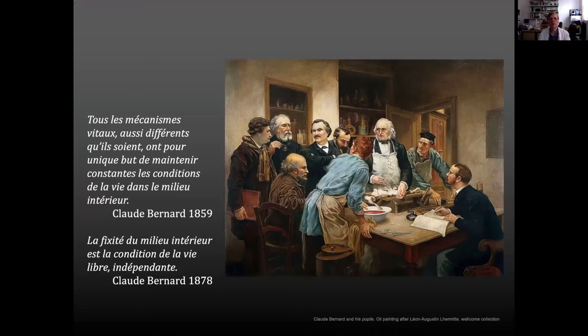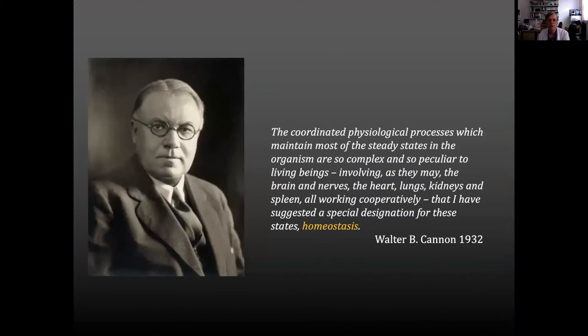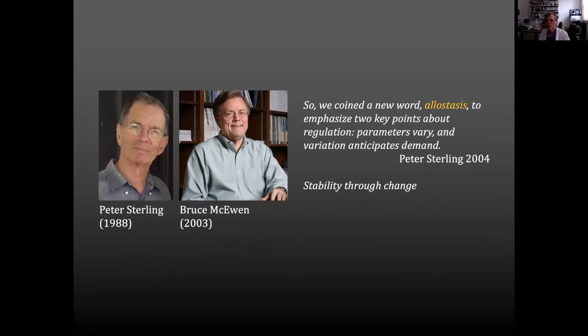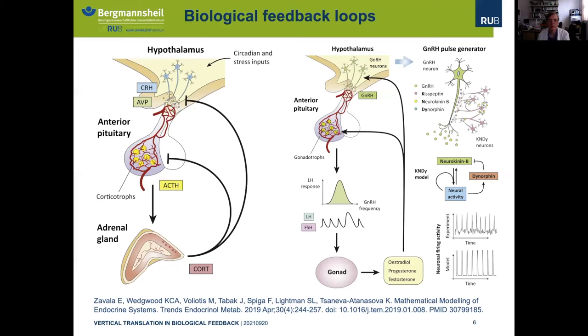The knowledge about this dates back to the middle of the 19th century when Claude Bernard pointed out the importance of the constancy of the internal milieu for a continued independent life. Walter Cannon in 1932 coined the term homeostasis for this constancy. Later, Peter Starling and Bruce McEwen coined the term allostasis to account for the organism's flexibility and possibility to adapt to different environmental conditions. But what remains at the center of both homeostasis and allostasis are feedback loops.